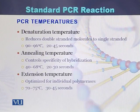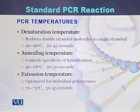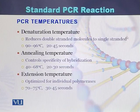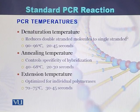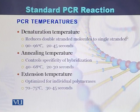Once all these ingredients are mixed, the PCR temperatures come into play because PCR consists of three steps. The first step is denaturation, where double-stranded DNA is converted into single-stranded DNA at 90 to 96 degrees centigrade. The second step is annealing, which controls primer hybridization with the template DNA at 40 to 68 degrees centigrade. The third step is extension, usually at 72 degrees centigrade, with variation between 72 to 75 degrees centigrade.